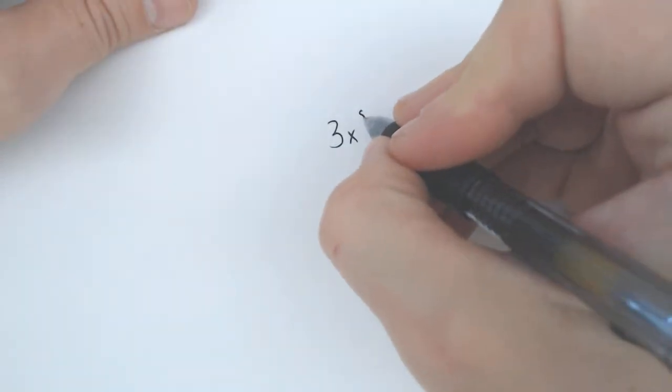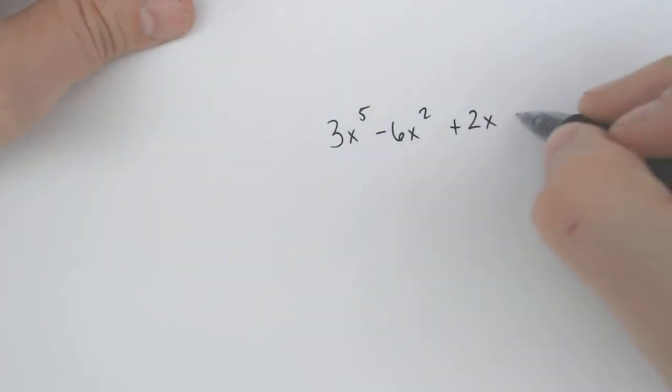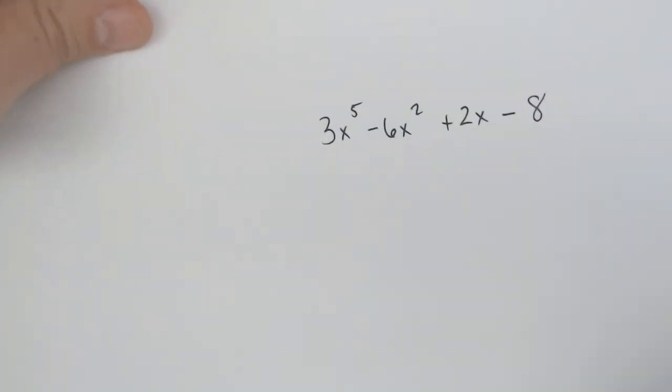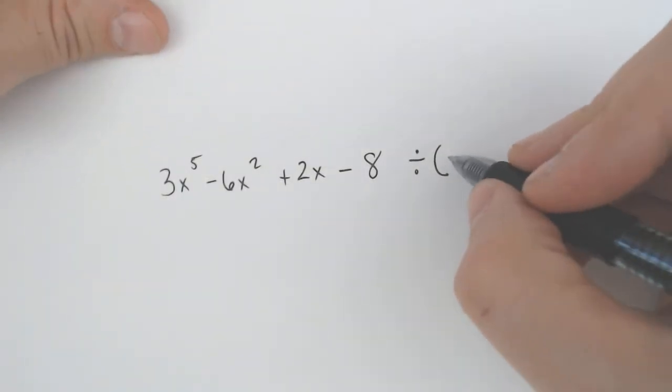So let's say we had something like 3x to the fifth minus 6x squared plus 2x minus 8. And we wanted to divide that by a single term like, let's go with 3x squared.